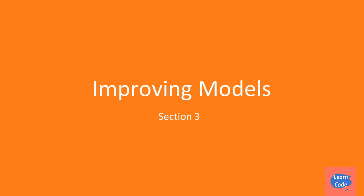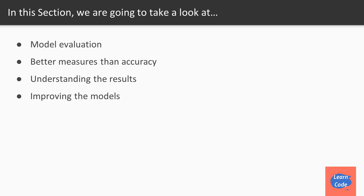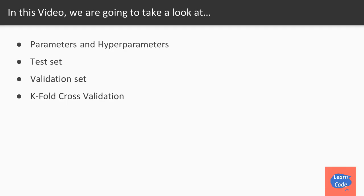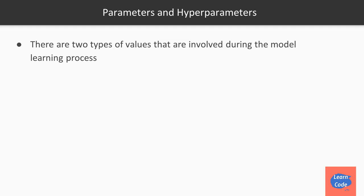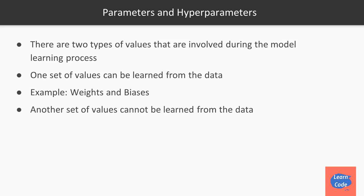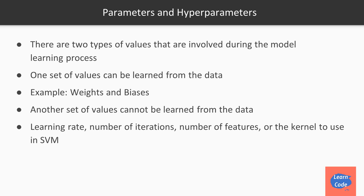Welcome to Section 3: Improving Models. In this section, we'll look at model evaluation, better measures and accuracy, understanding the results, and improving the model. In this video on model evaluation, we'll look at parameters and hyperparameters, what is a test set, what is a validation set, and k-fold cross validation. There are two types of values in model learning: values that can be learned from data — like weights and biases — and values that cannot be learned and must be estimated by the user, like the learning rate, number of iterations, number of features, or the kernel used in SVM. Hyperparameters are the knobs we can tweak to better understand the data.